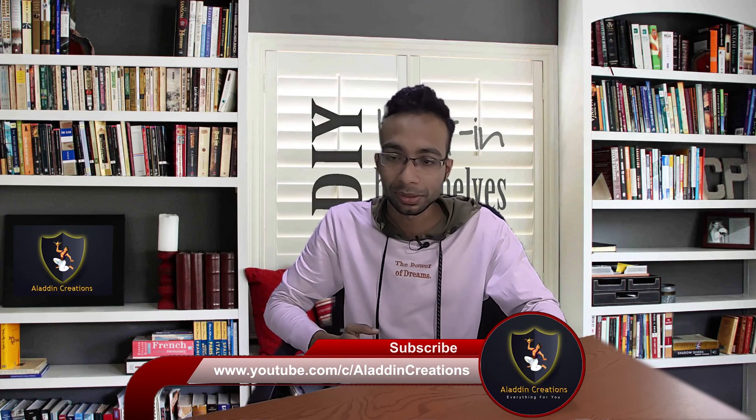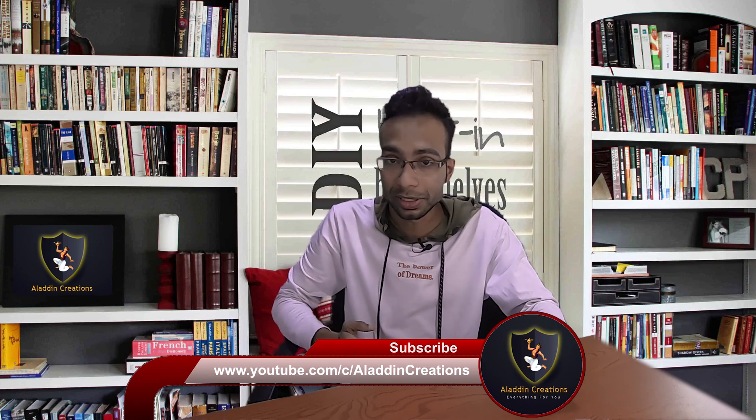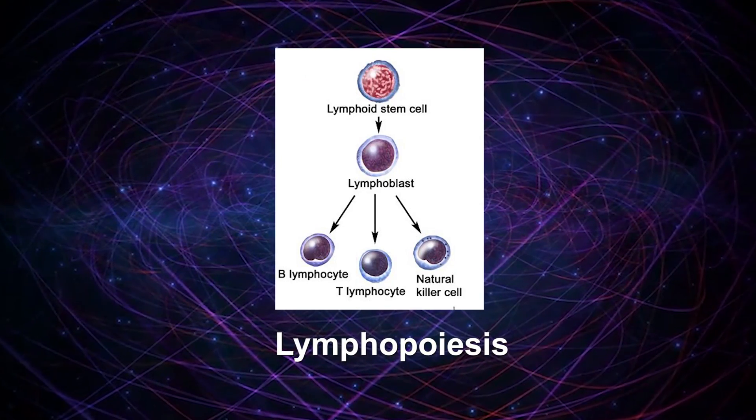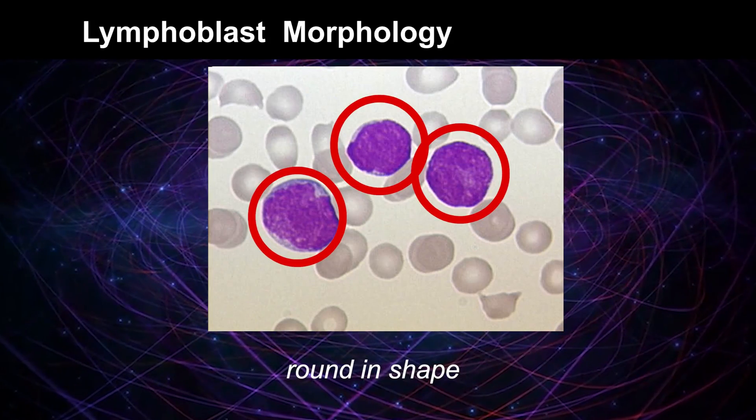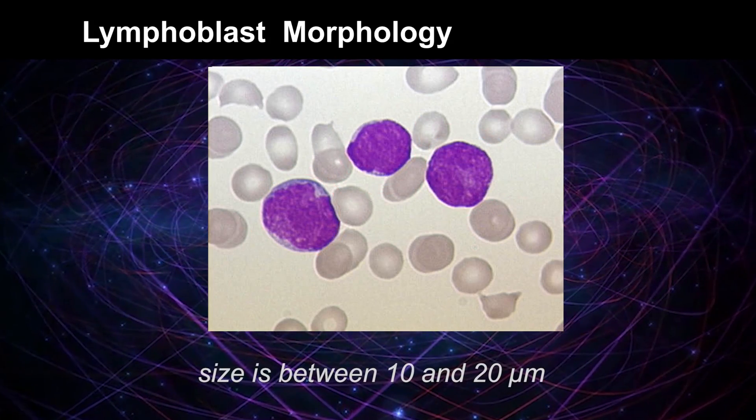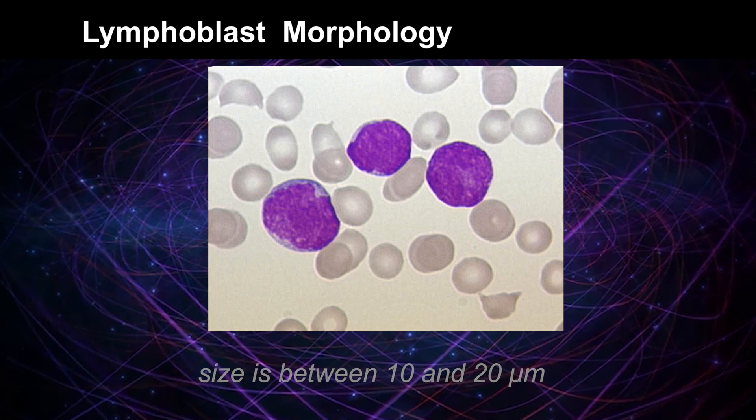Lymphoblast is the progenitor cell of a special type of white blood cells called T and B lymphocytes. They either remain in the bone marrow or migrate into the thymus gland in the chest. This differentiation process of lymphoblasts into lymphocytes is called lymphopoiesis.